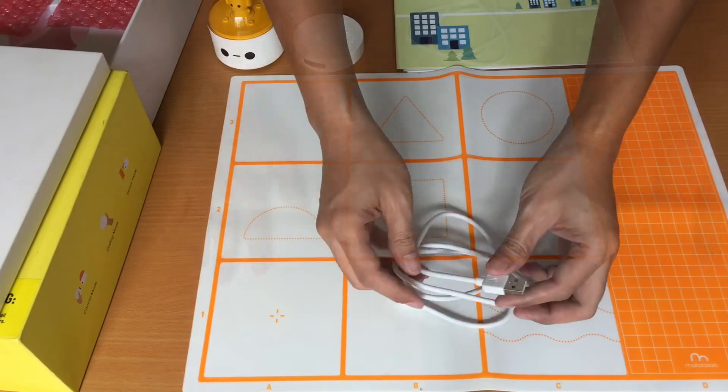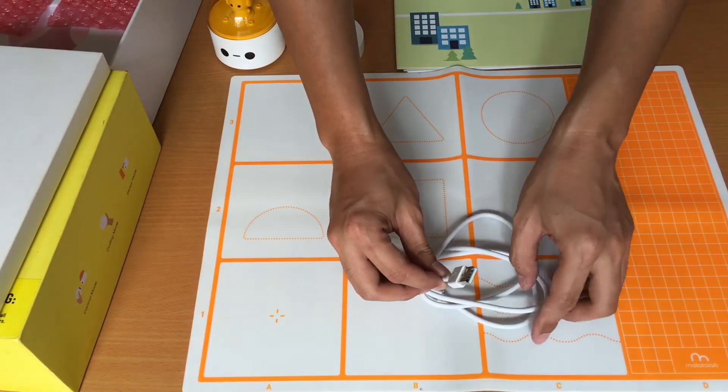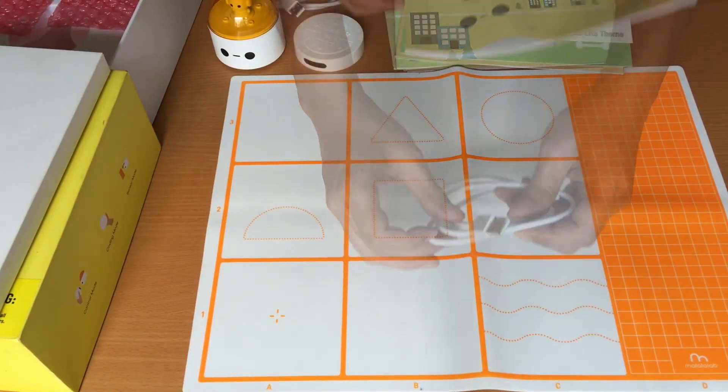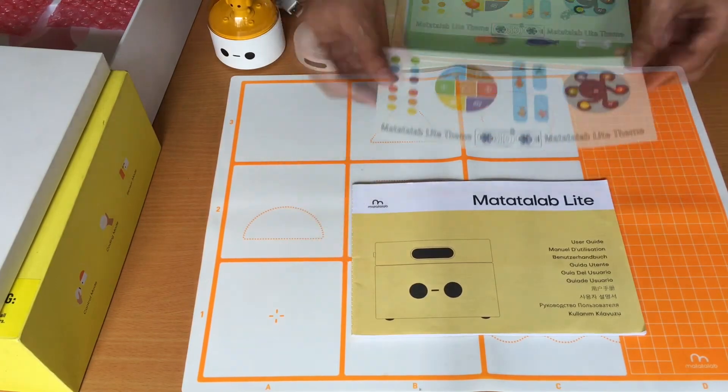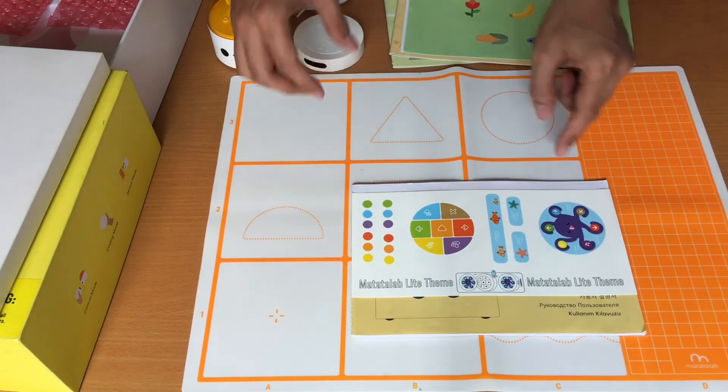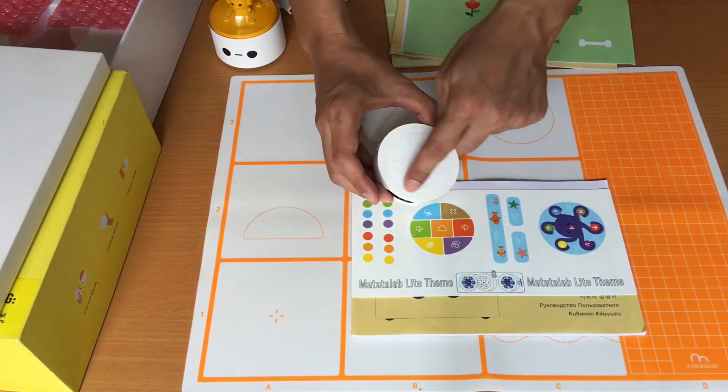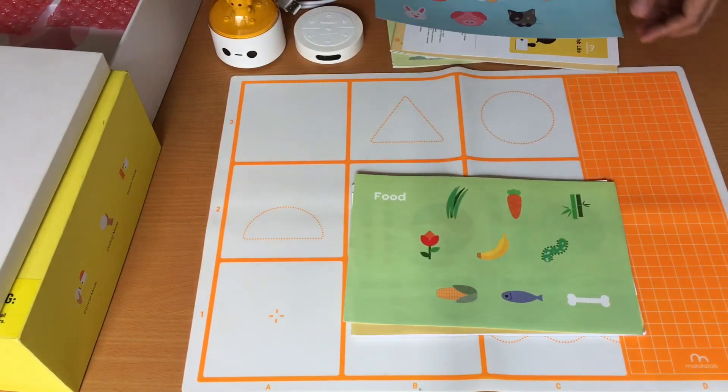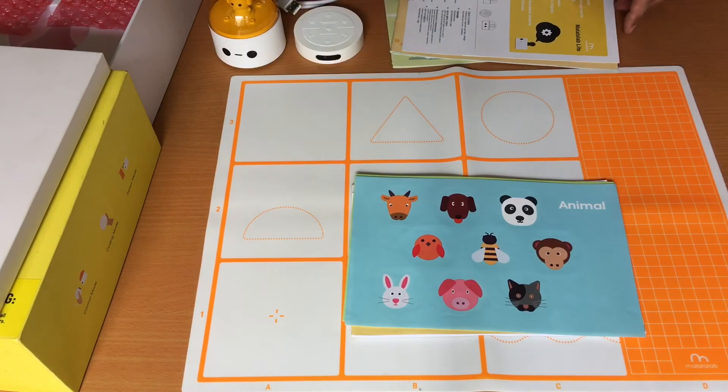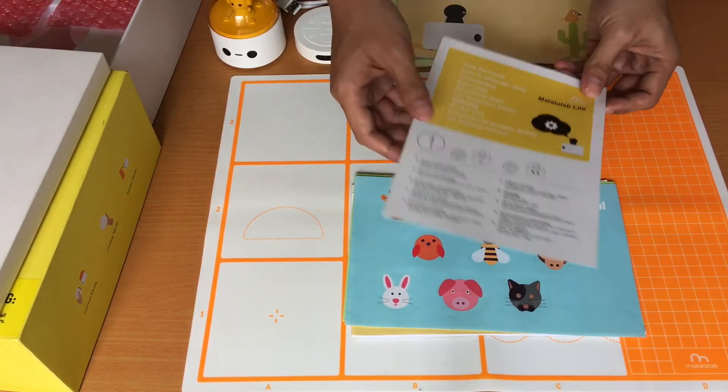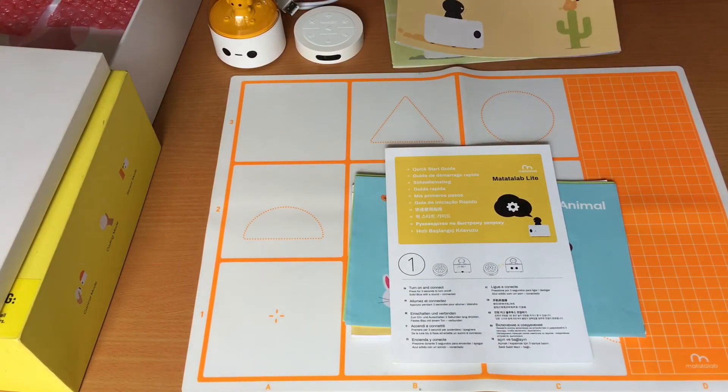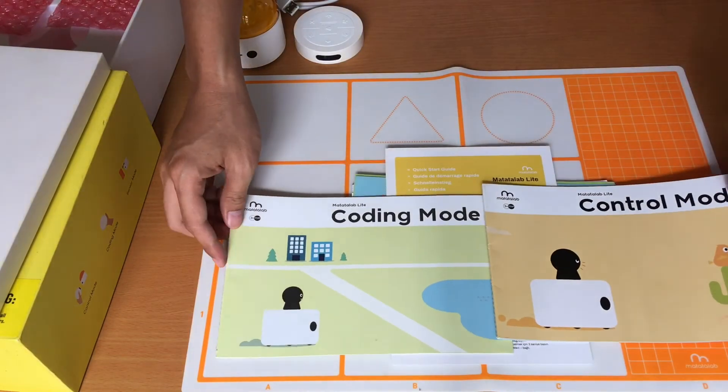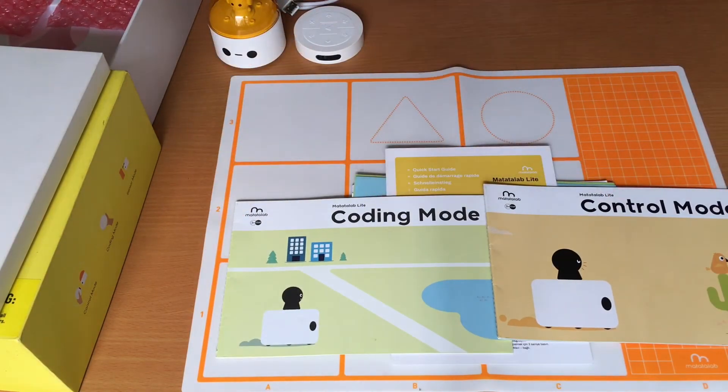This is a map, a simple map. And a USB-C charger cable. User guide. Theme stickers which you can stick onto the controller. Food stickers. Animal stickers. Quick start guide. And the challenge booklets for the control mode and the coding mode.